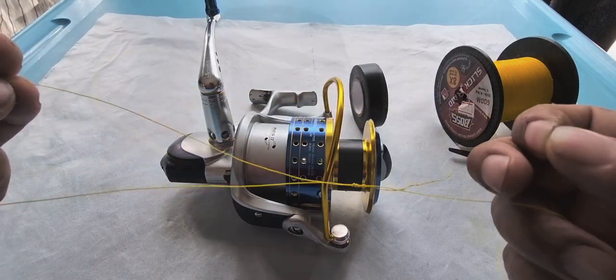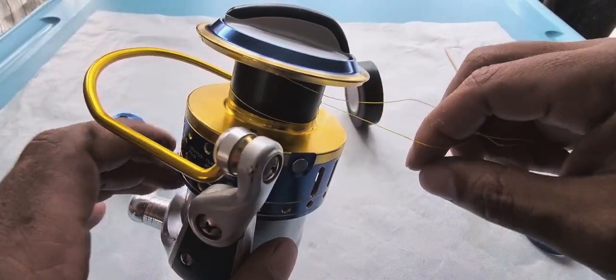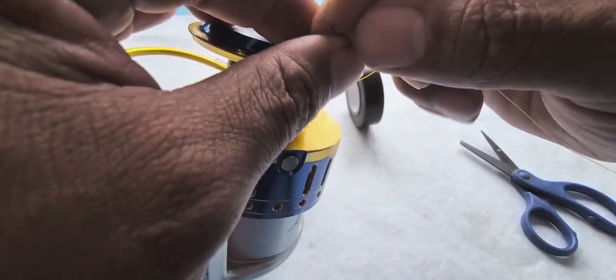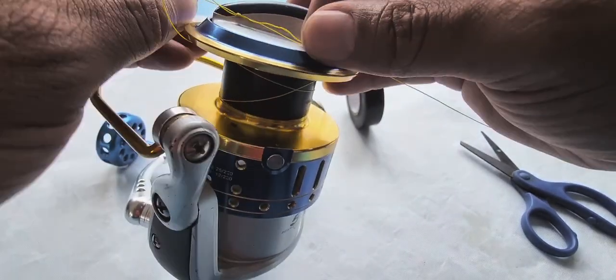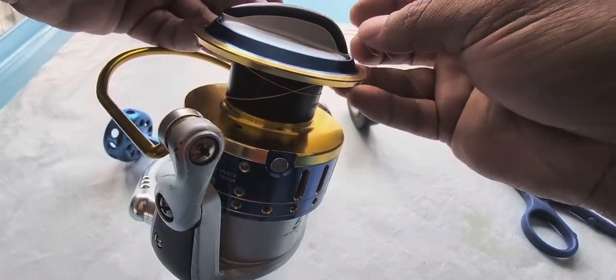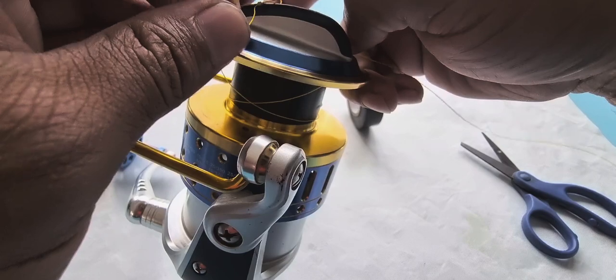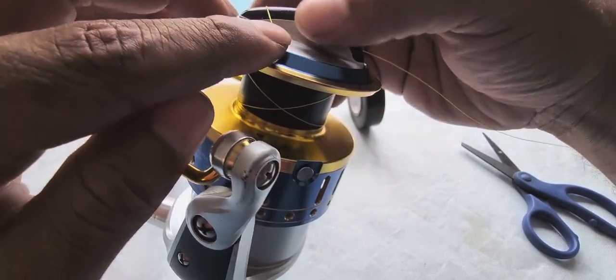Just note that before you put the loop around your reel, it would be best for you to put your reel onto the bottom part of your rod and at least have your braid through the bottom ring of the rod to make filling up the reel much easier.